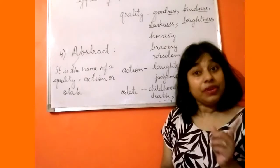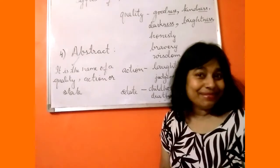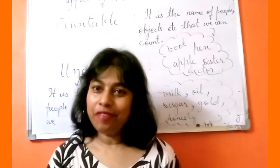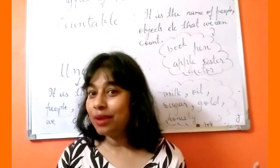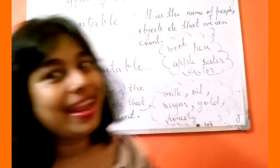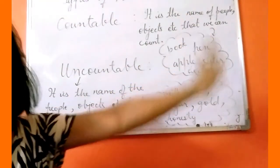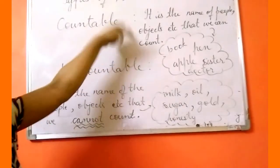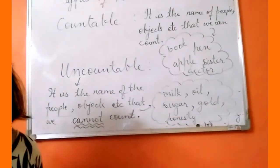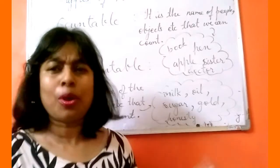Now let's move on to a different classification of noun — nouns that we can count or cannot count. If we can count them, they are countable nouns. If we cannot count them, they are uncountable nouns. So if we can count the name of people or objects, it is a countable noun. Examples: book, pen, apple, sister, doctor, brother, horse, zebra, dog — all that you can count is a countable noun.